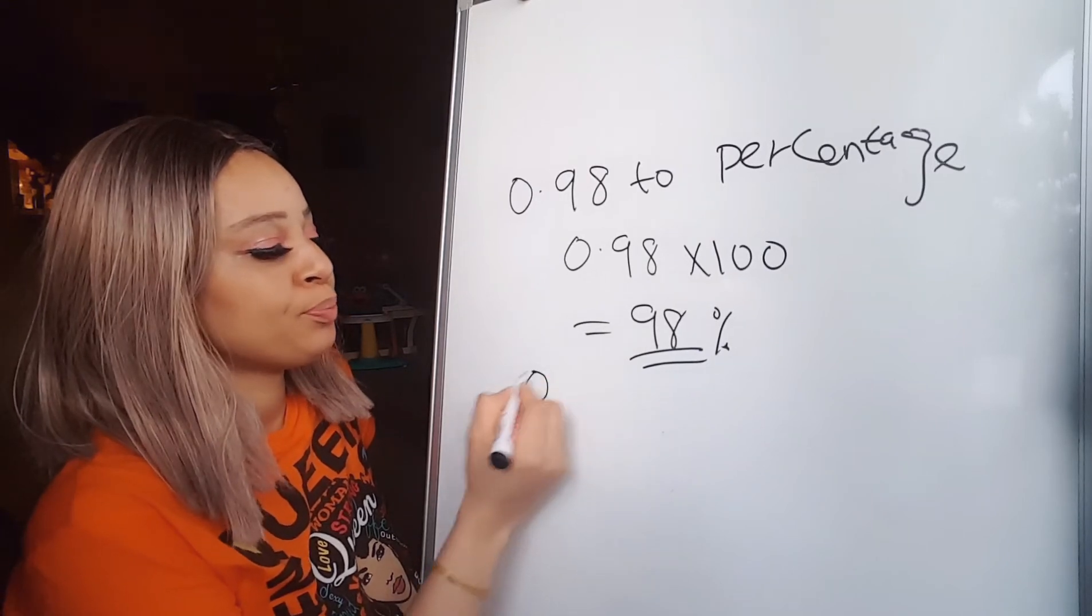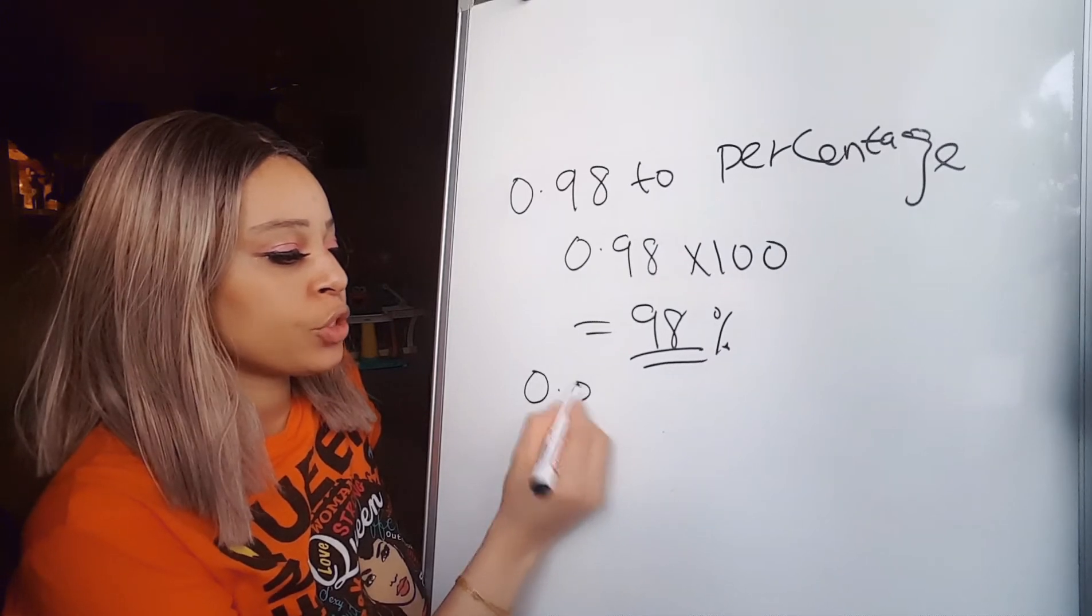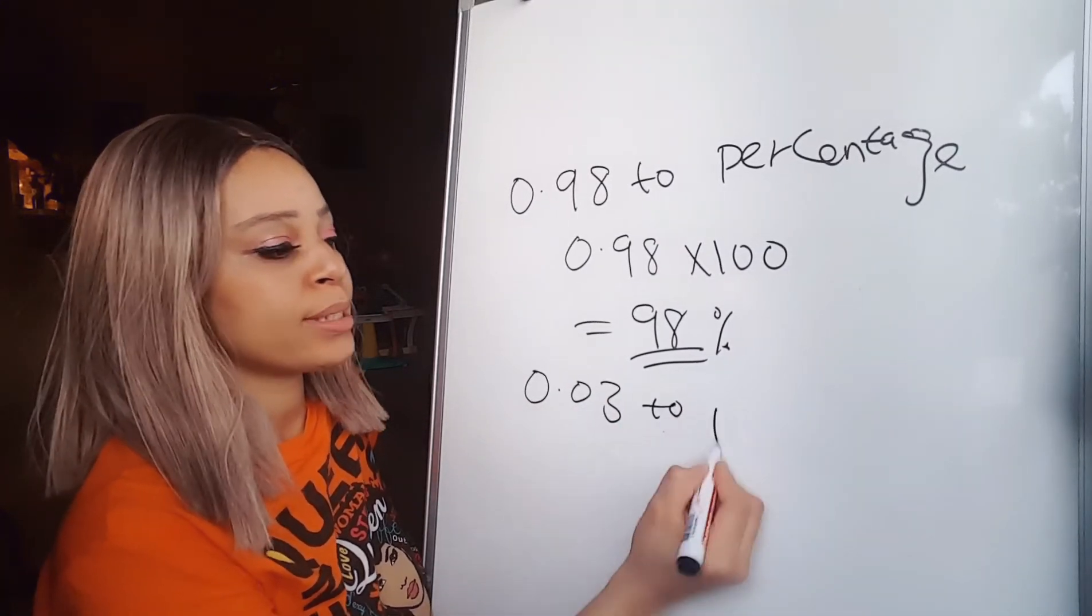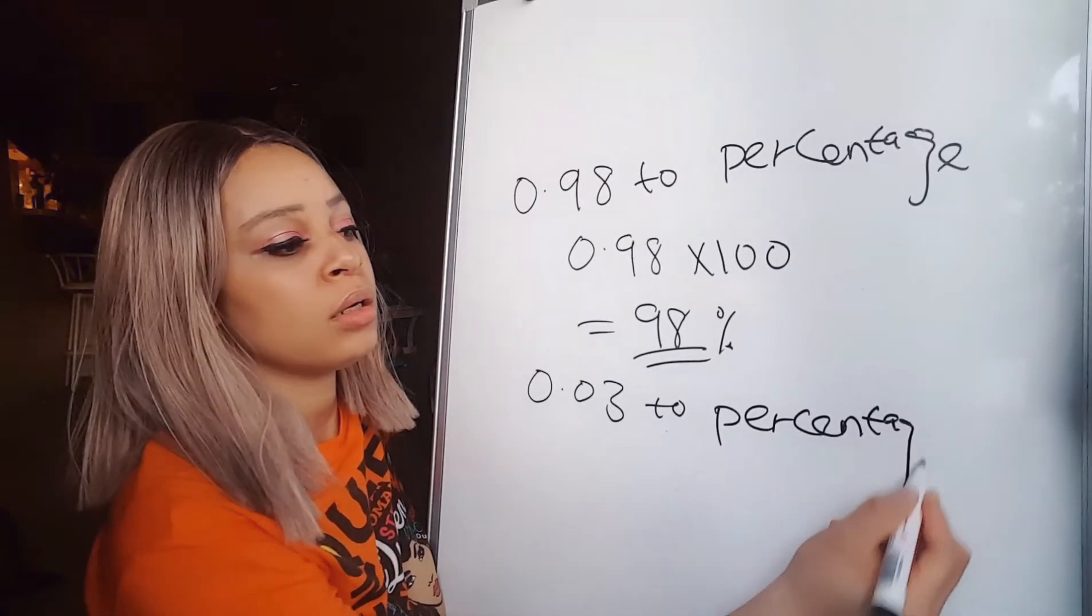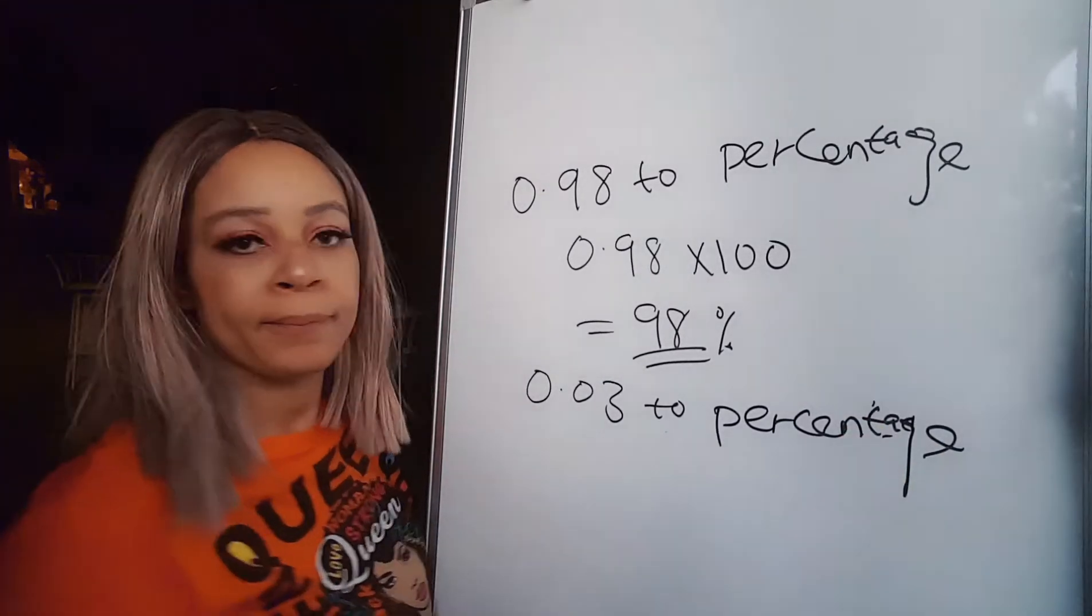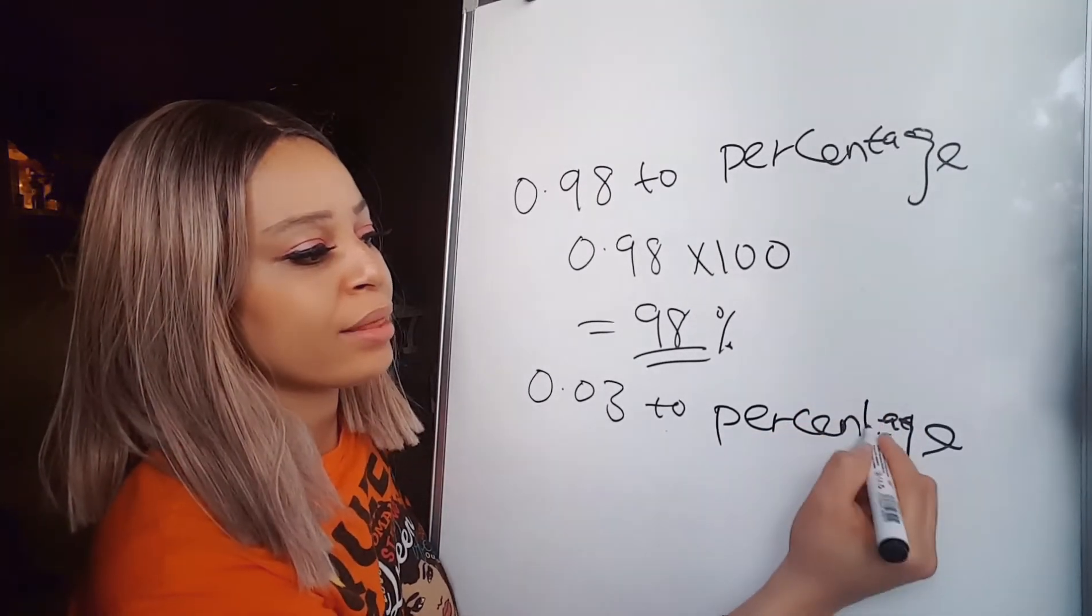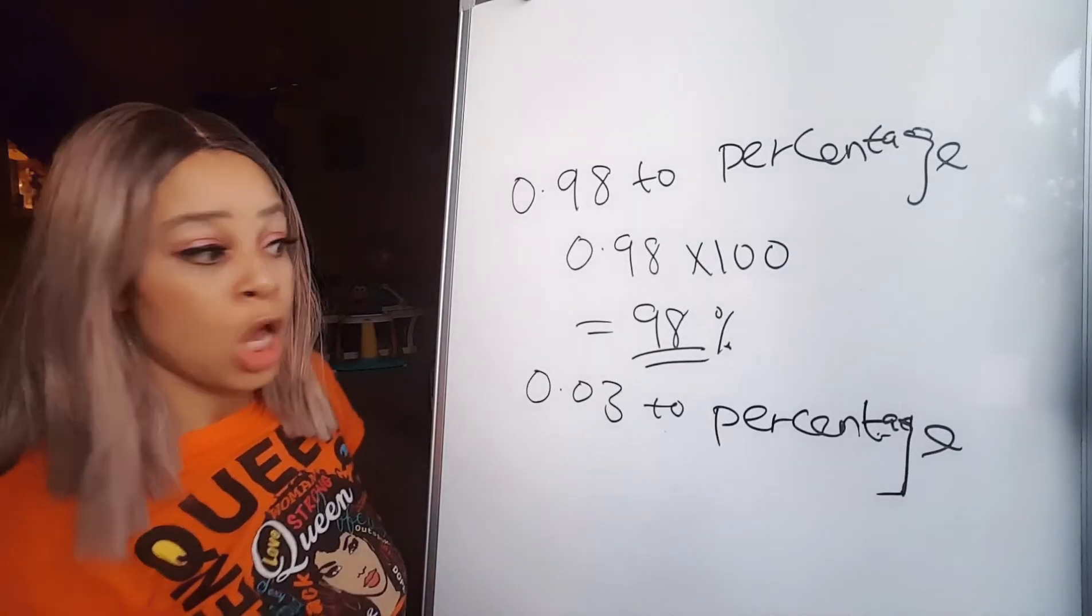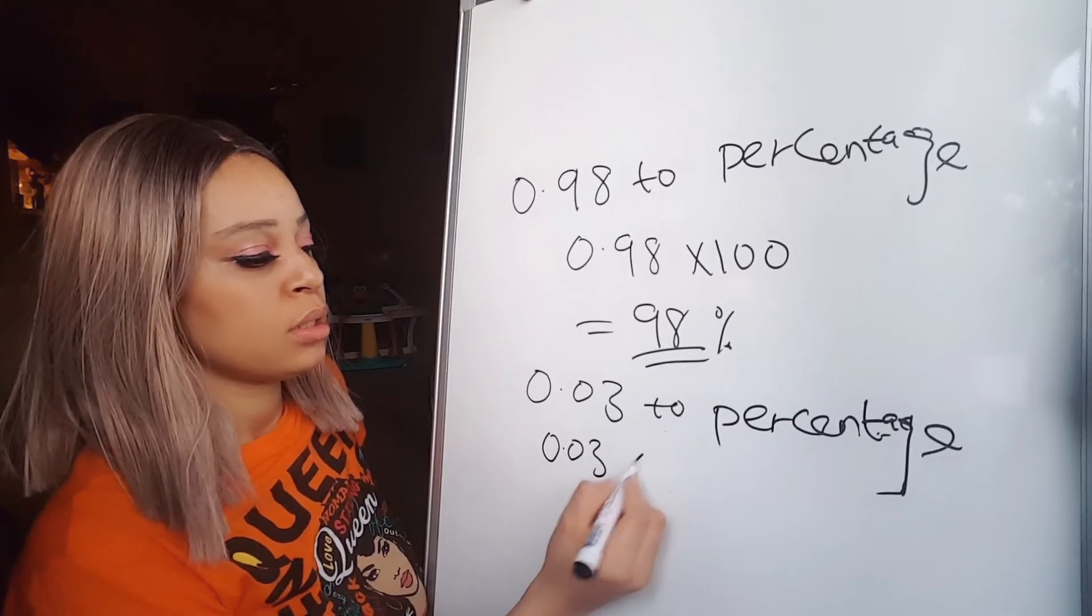0.03 to percentage. Oh, it's still the same. Oh gosh, okay, it's okay. To percentage. Why am I not getting 50? Okay, to percentage, all you gotta do is also 0.03 times 100.